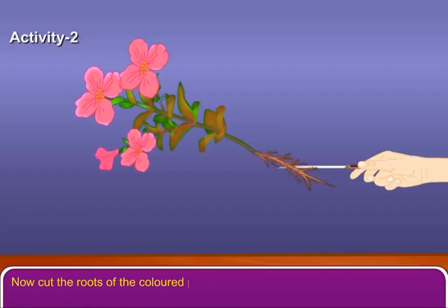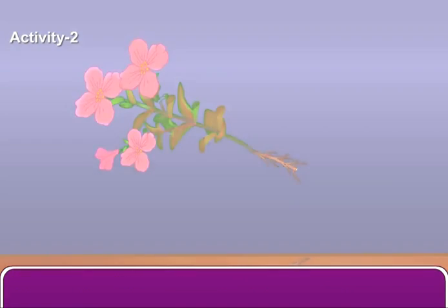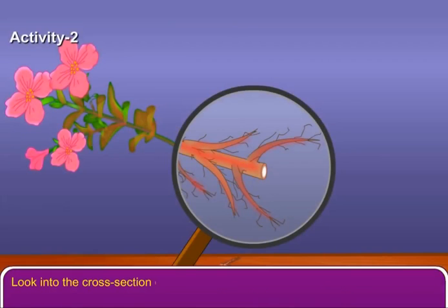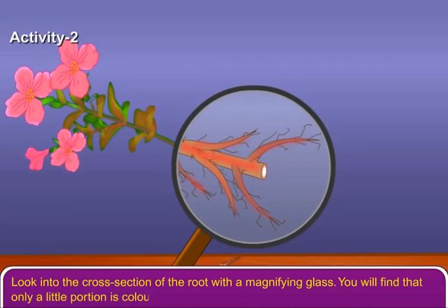Now cut the roots of the colored plant with a sharp blade. Look into the cross section of the root with a magnifying glass. You will find that only a little portion is colored.